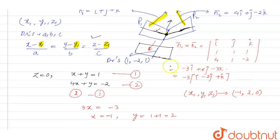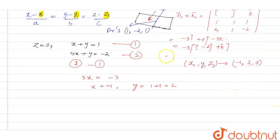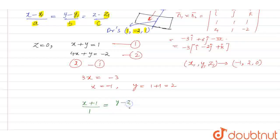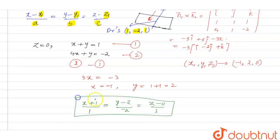Now, by using this point and the direction ratios 1, minus 2, 1, the equation of line in symmetrical form is: (x plus 1) divided by 1 equals (y minus 2) divided by minus 2 equals (z minus 0) divided by 1. This is the required equation of the line in symmetrical form.